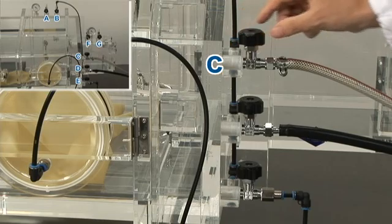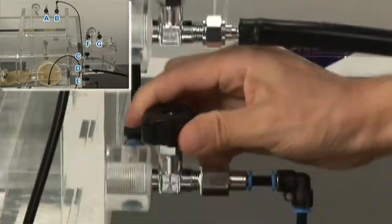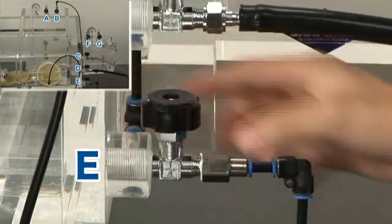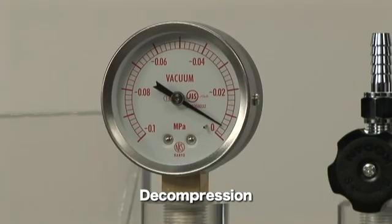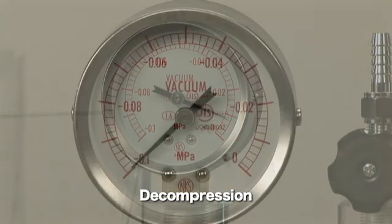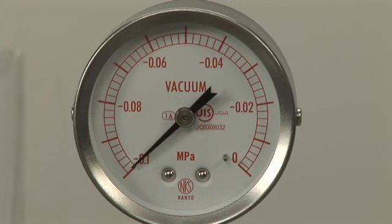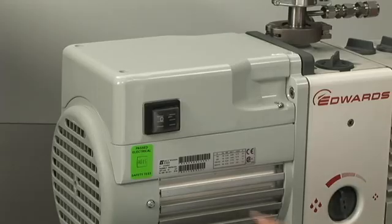Then, open a certain valve and operate it to reduce the pressure. When the vacuum gauge indicates, close the valve and stop the vacuum pump's operation.